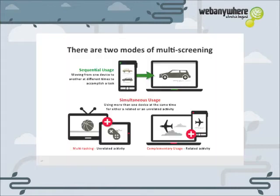The research shows that multiple screens are used sequentially or simultaneously. Sequential use means that activities are started on one device and then paused and continued on a different device later. Simultaneous use means that multiple screens are used together, probably for different purposes.